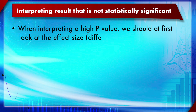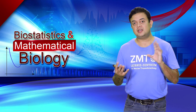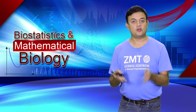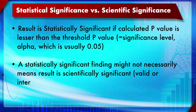When interpreting a high p-value, you should first examine the effect size or difference in means, and the width of the confidence interval — these are more important than simply looking at p-values alone. There is a key difference between statistical significance and scientific, biological, or clinical significance: a statistically significant finding does not necessarily mean the result is scientifically or clinically meaningful.